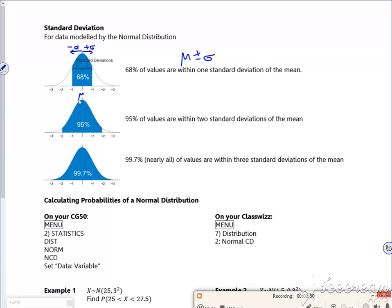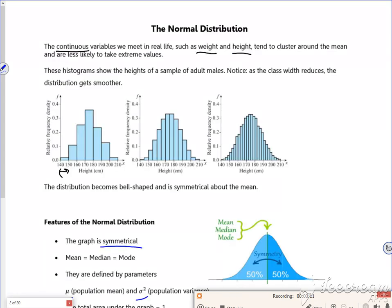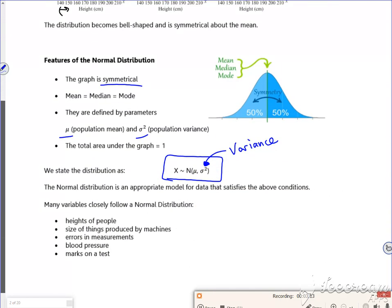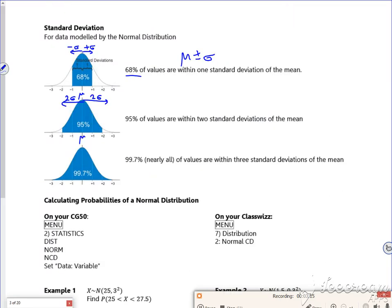Then if I go for two standard deviations away from here, so there's my mean again. If I go two standard deviations, then it's μ plus or minus two σs, is 95% of your values.